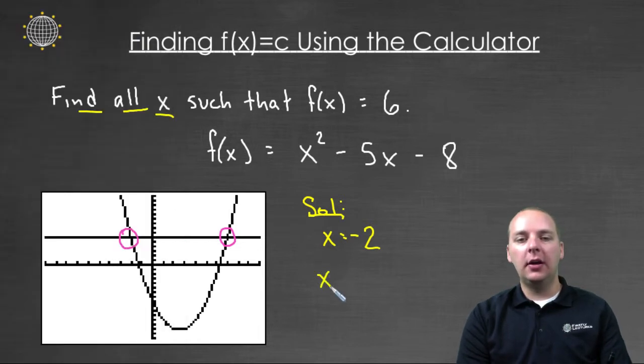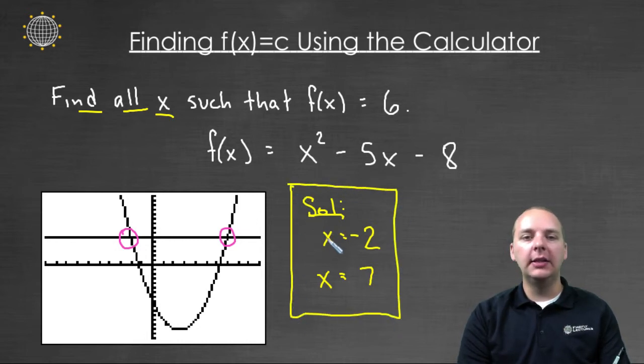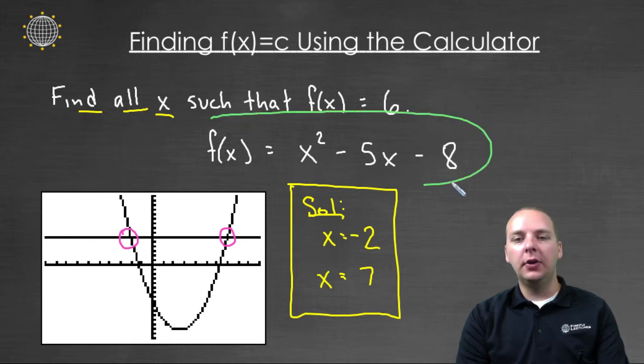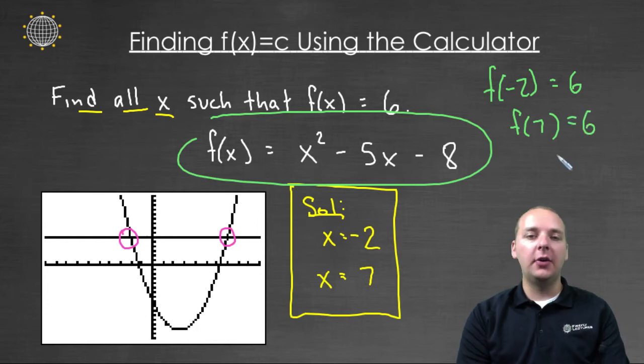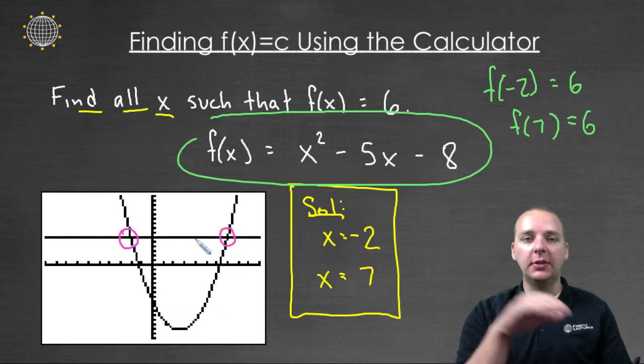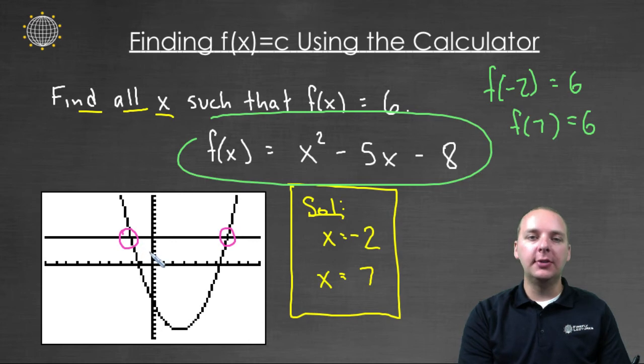And so we can obviously go back and check both of these answers right here. I don't think I'm going to do it in this video. But for this quadratic right here, if you took f(-2), or you took f(7), either one of those would give you a y value of six. And they're the only x values that would do that. So it's just a neat little use of the calculator where you graph not only the quadratic, but the constant function six, and then use the intersect feature on your calculator to find the solution.